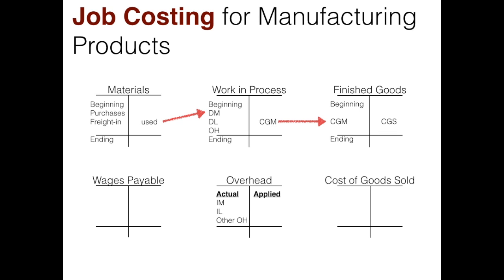Materials houses all of our materials. For a wooden chair, for example, it would include not just wood but also screws, glue, and nails. When we have used materials there are actually two types: direct and indirect. The direct portion of used materials goes directly into work in process, but the indirect materials go into overhead. So the wood goes into work in process, while the glue, screws, and nails go into overhead as indirect materials.